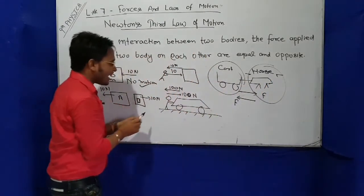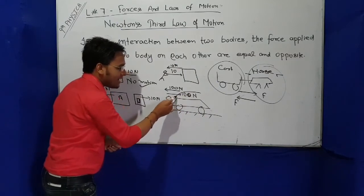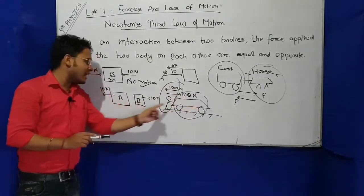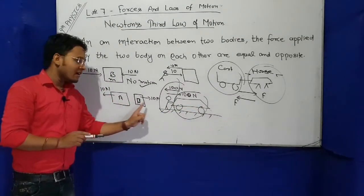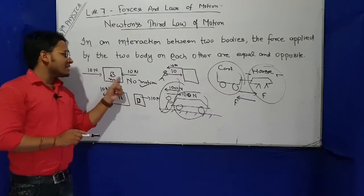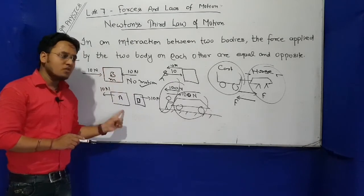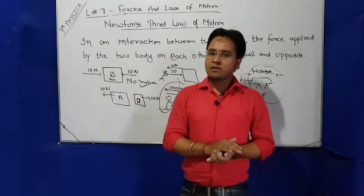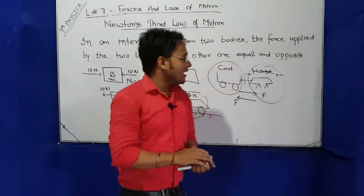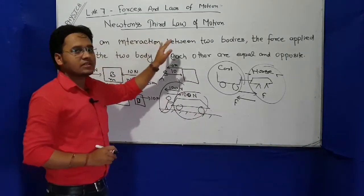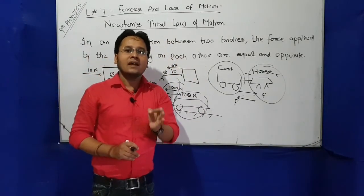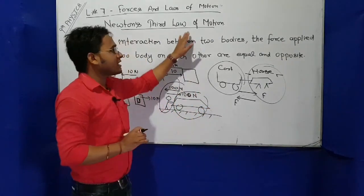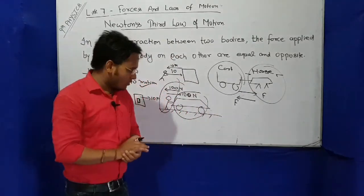The 100 Newtons force is applied by the car on the boy, and 100 Newtons by the boy on the car. Equal opposite forces act on two different bodies, so the body moves. If the same forces act on the same body, the body will not move. This is the solution to both questions. So this is your Newton third law explanation. In the next lecture we will talk about conservation of momentum, which is your last topic according to your 9th class NCERT book, according to force and law of motion chapter.